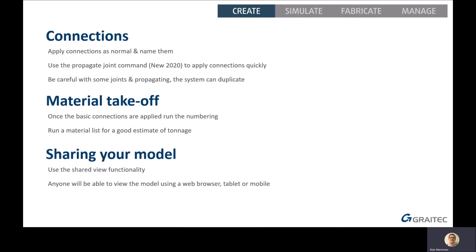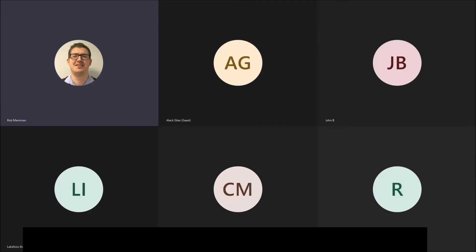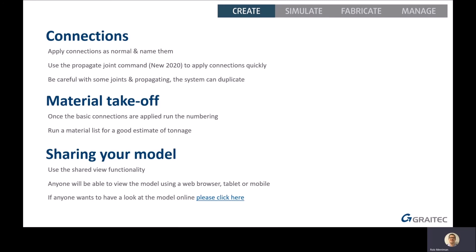We can then click the Share button, copy the link, and put that in our email when we're sending out our tender. I'll go back to sharing the PowerPoint. On the last slide there is a link — 'if anyone wants to have a look at the model online please click here' — which will open the shared view link in a web browser so you can interact with the model directly from the presentation.